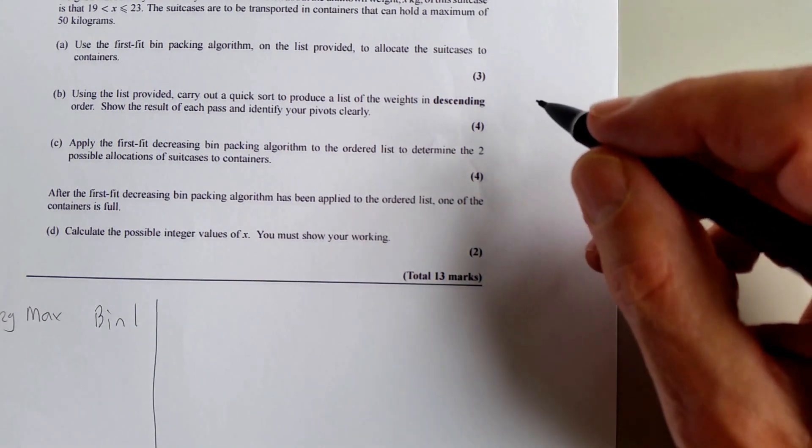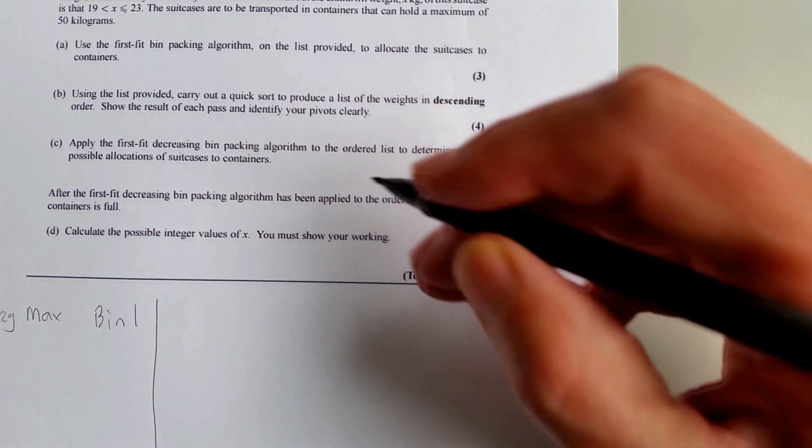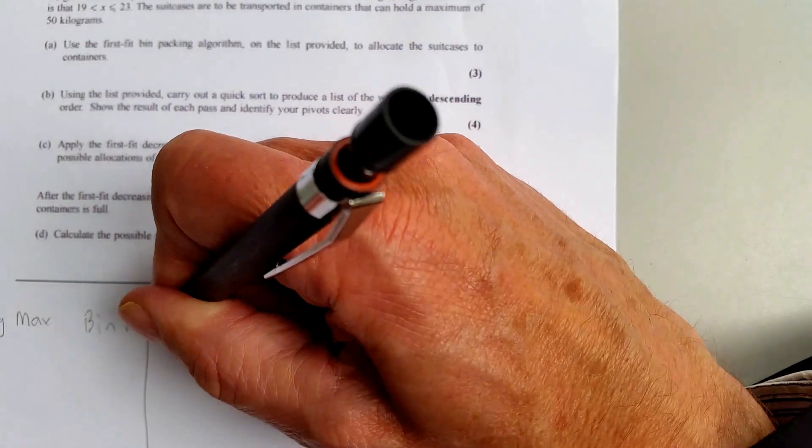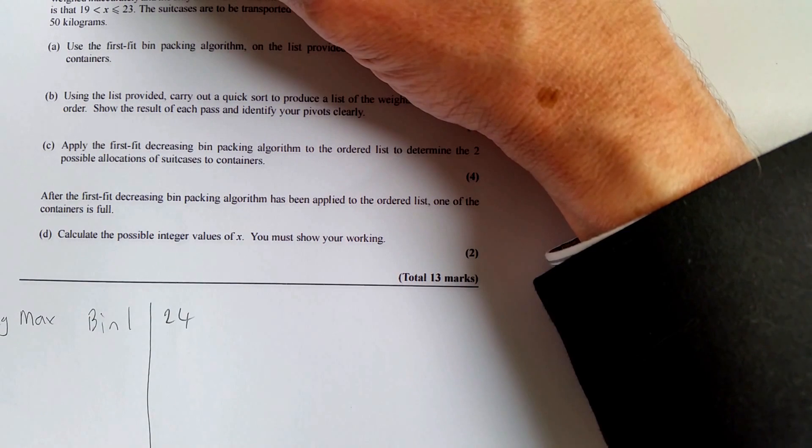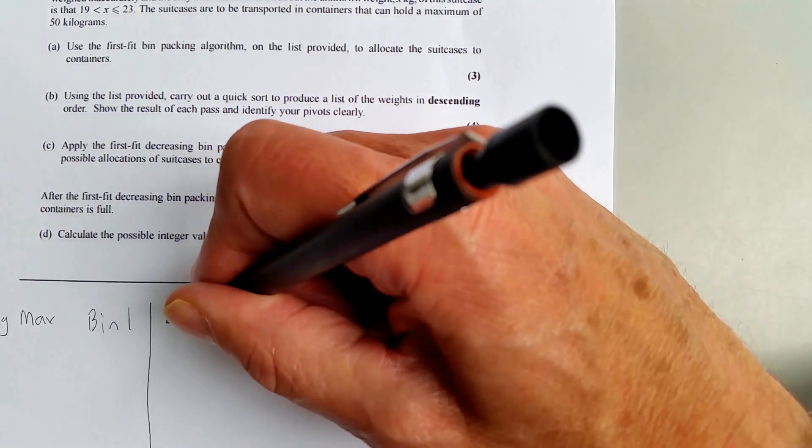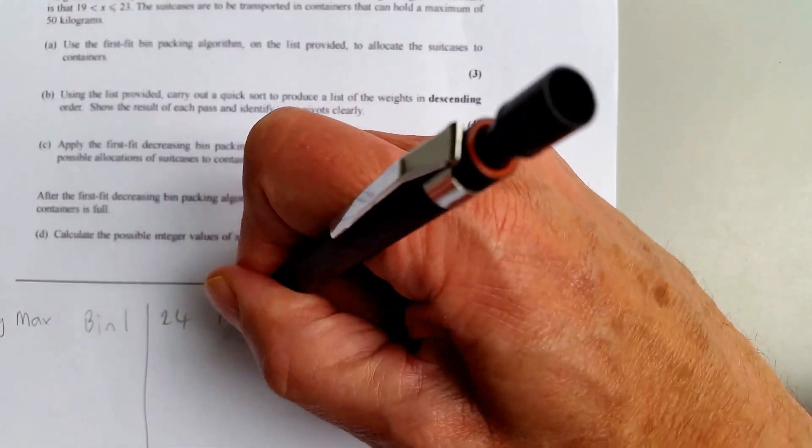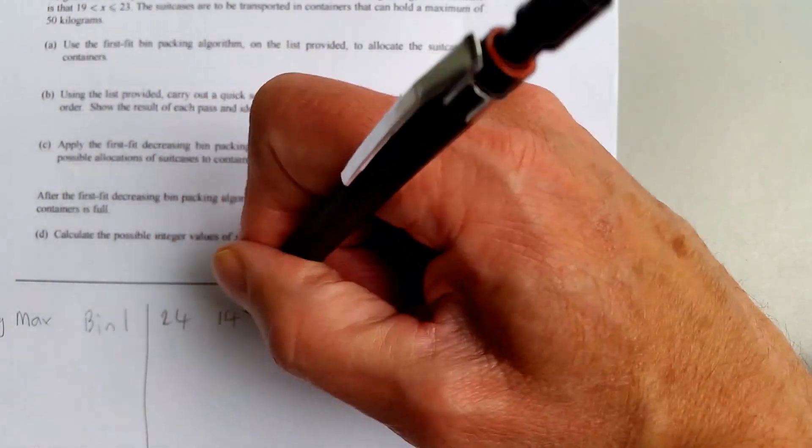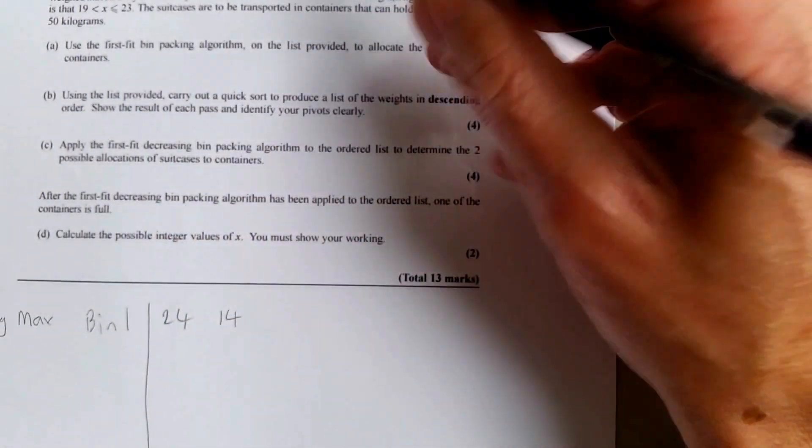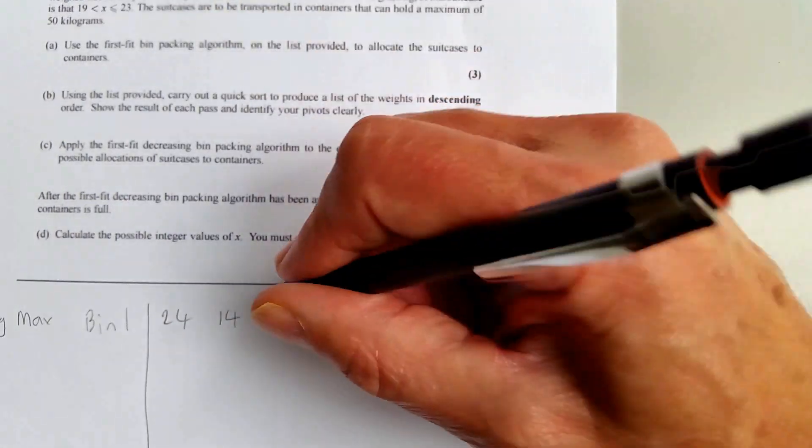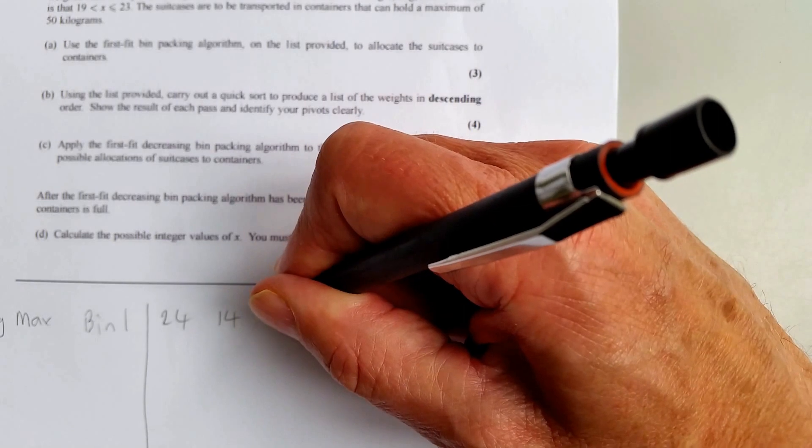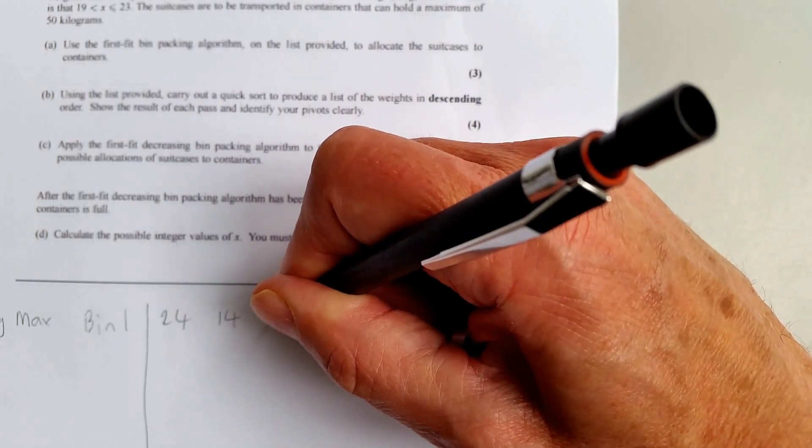So bin one: we've got 24, and we need a maximum of 50. Bin one still fits 14 in because 14 and 24 is 38, which is less than 50. And 38 plus 8 is 46, which is still less than 50.